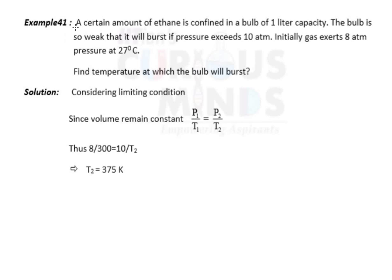Hi guys, let us solve this problem. A certain amount of ethane is confined in a bulb of one liter capacity. The bulb is so weak that it will burst if pressure exceeds 10 atm. Initially gas exerts 8 atm pressure at 27 degrees Celsius.